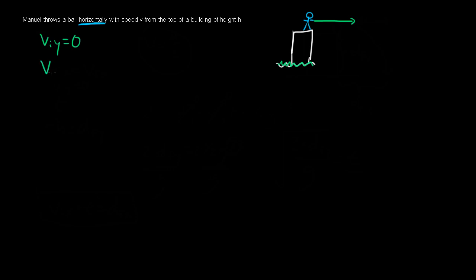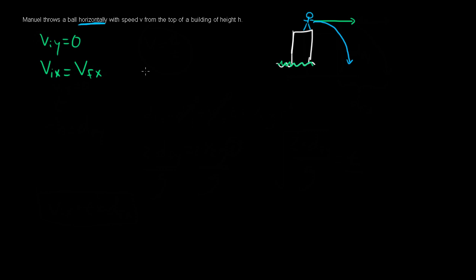So vix is equal to some velocity v. And because nothing else is acting on the ball in the x direction, the initial velocity equals the final velocity in x. The velocity in the x direction will remain constant throughout the entire traversal of the ball. The ball will follow a semi-parabolic path, thrown with initial speed v from the building of height h.